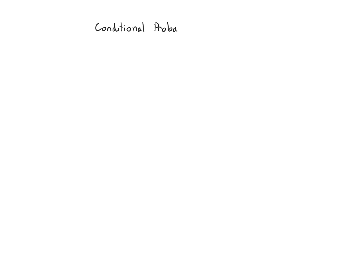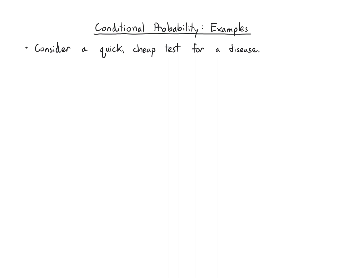Let's work through some examples of conditional probability so that we can build up our intuition a little bit more. For the purposes of this video, let's say we've developed a quick cheap test for a disease and we want to understand what it means to get a positive result from that test. Let the event A be the event that the subject has the disease — they actually have it — and B is the event that the test we've designed is positive.